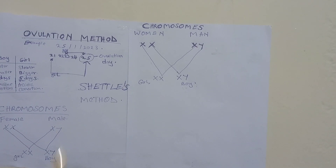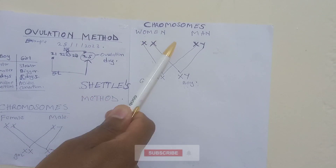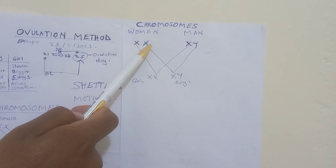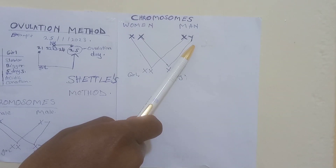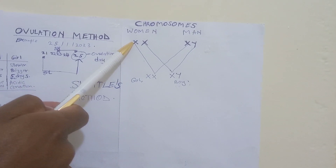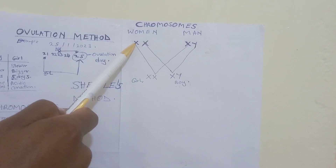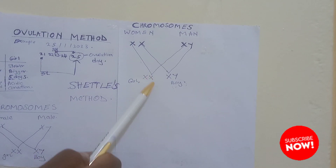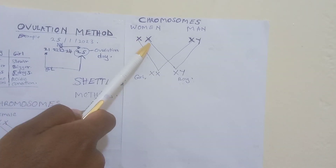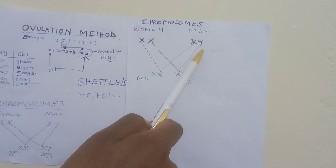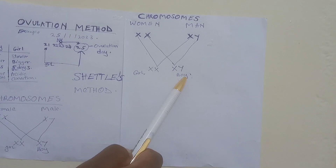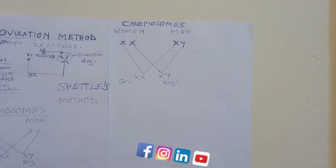Before we go to the methods of Dr. Shettles, we need to understand human chromosomes. Women produce XX chromosomes and men have XY chromosomes. If during sexual intercourse a woman donates the X chromosome and a man donates the X chromosome, they're going to have XX — a baby girl. If a woman donates the X chromosome and a man donates the Y chromosome, they'll have XY — a baby boy.